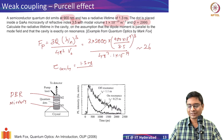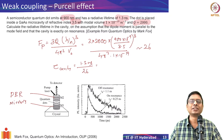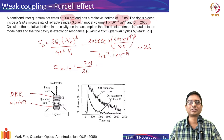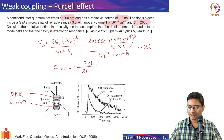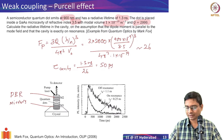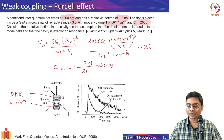The radiative lifetime in the cavity is 1.3 nanoseconds divided by the Purcell factor of about 26, giving approximately 1300 / 25 ≈ 50 picoseconds. So from 1.3 nanoseconds we have made the spontaneous emission much faster.